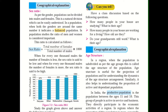In population studies, the ratio of men and women is considered important. The ratio is calculated as: total number of females ÷ total number of males × 1000. When for every 1000 males the number of females is less, the sex ratio is said to be low. When for every 1000 males the number of females is more, the sex ratio is said to be high.